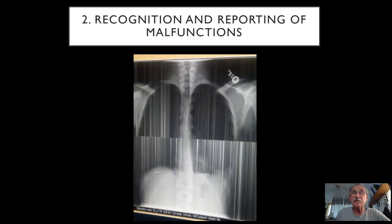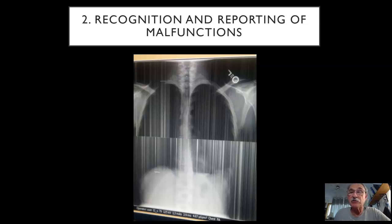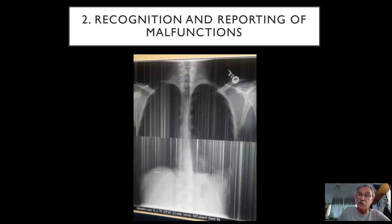If your X-ray image comes up looking abnormal, you might expect that we have a problem somewhere. This is not something that we as technologists can fix — this is a malfunction somewhere in the processing chain. For example, I can see the bony architecture of the shoulders and the marker clearly, but I'm not seeing the lung fields and there's a very strange artifact going through it. This is something we would need to communicate immediately to the clinical engineer, who could come and determine what the problem is and reset or repair it.